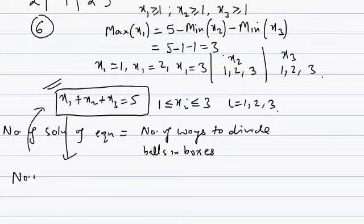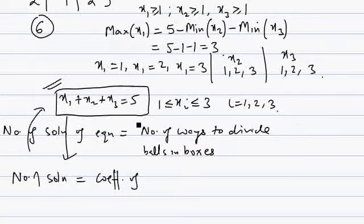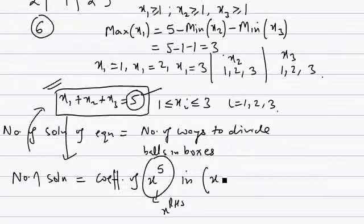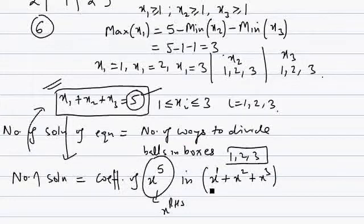Let's see how to find the number of solutions of this equation. There's a formula or method — the derivation is not important since the exam is objective. The number of solutions equals the coefficient of x to the power of the right-hand side, which is 5. We find this coefficient in an expansion formed by taking each variable and writing the values it can take as powers of x, then adding them.